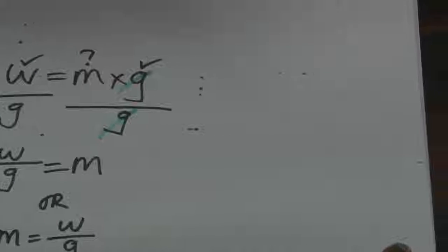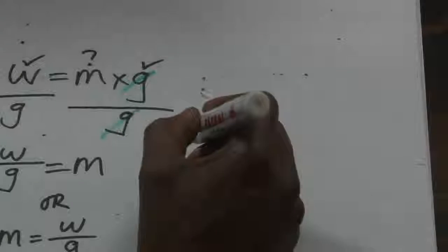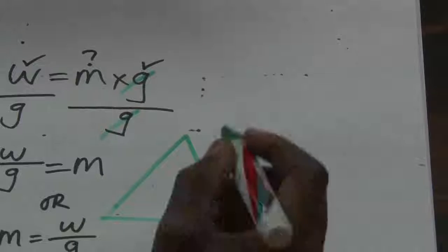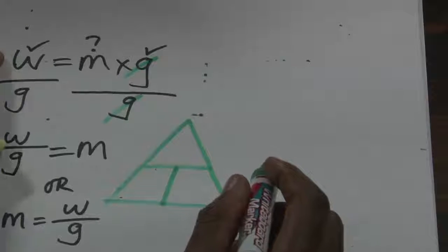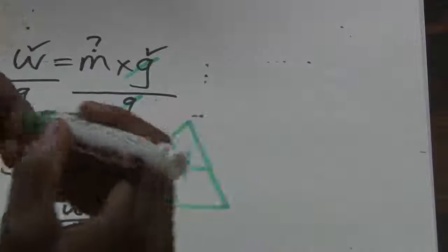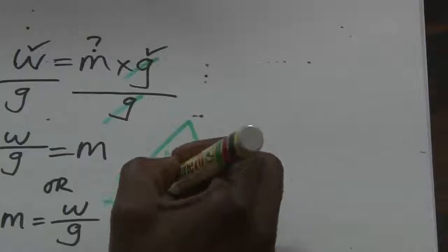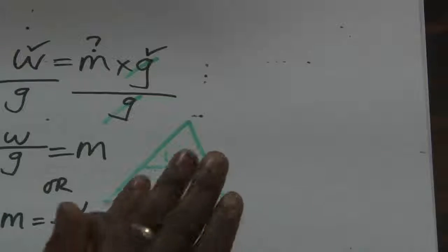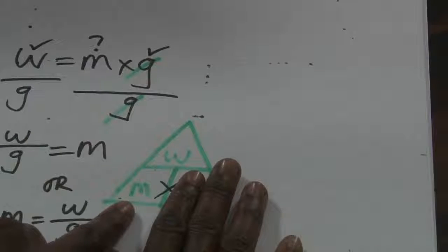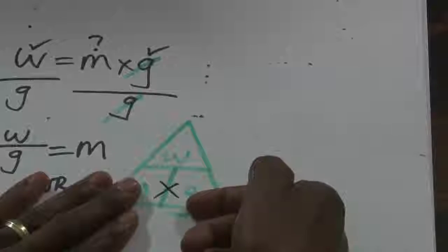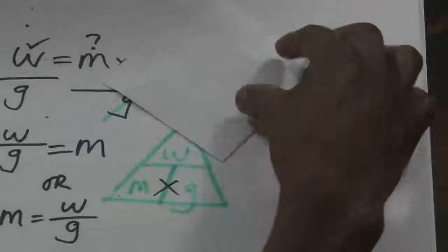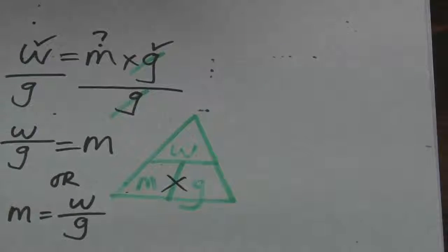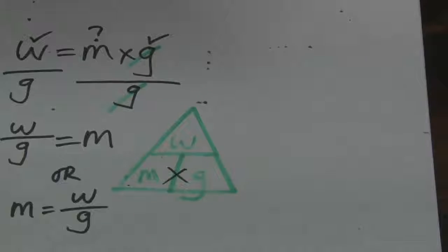Some people use a triangle to remember these formulas. You draw a triangle divided into three parts. Because weight equals mass times gravity, you put weight on top, and then mass and gravity at the bottom with a multiplication sign. If you're looking for gravity, cover it and you have weight divided by mass. If you're looking for mass, you have weight divided by gravity. If you're looking for weight, you use mass times gravity.